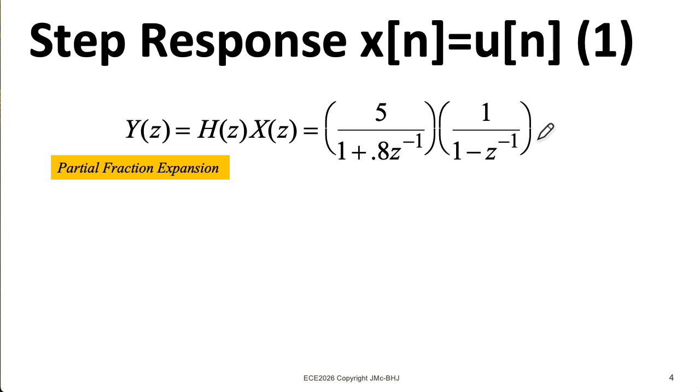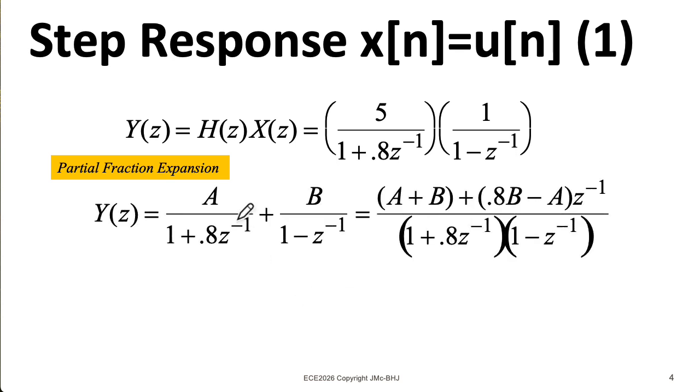Now we can perform a partial fraction expansion. So we'll take the first term here and multiply the numerator and denominator by 1 minus Z to the minus 1, and then take the second term and multiply its numerator and denominator by 1 plus 0.8 Z to the minus 1. That will allow us to write this in terms of a common denominator.